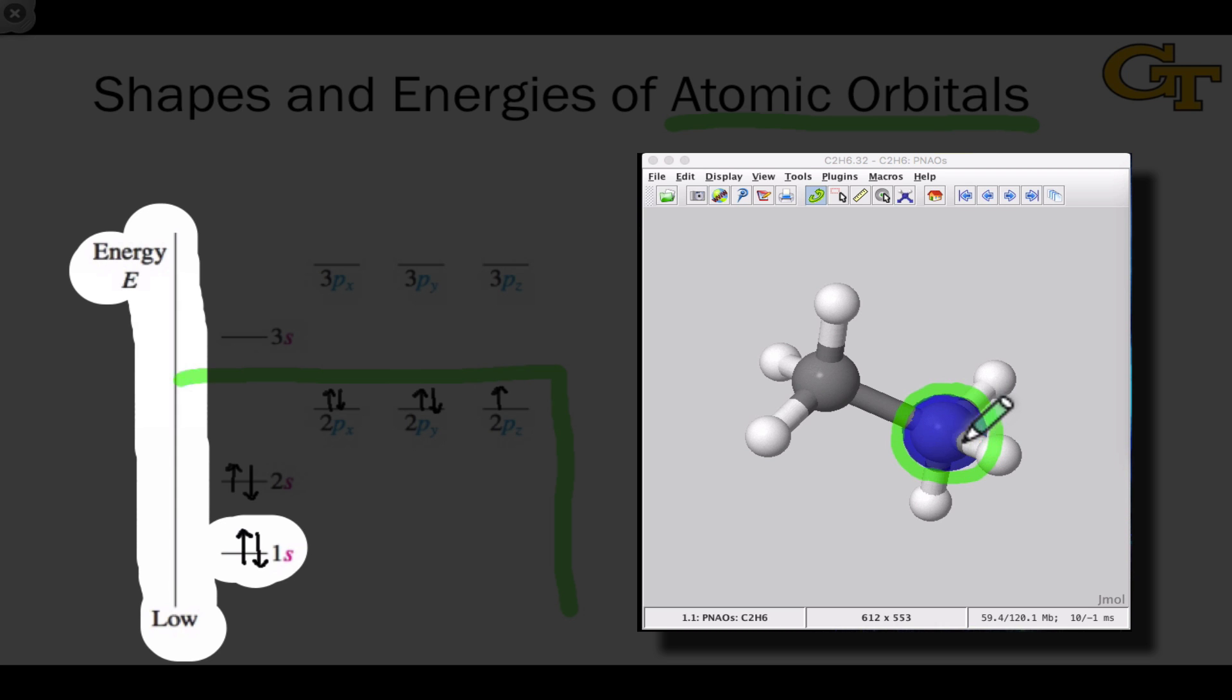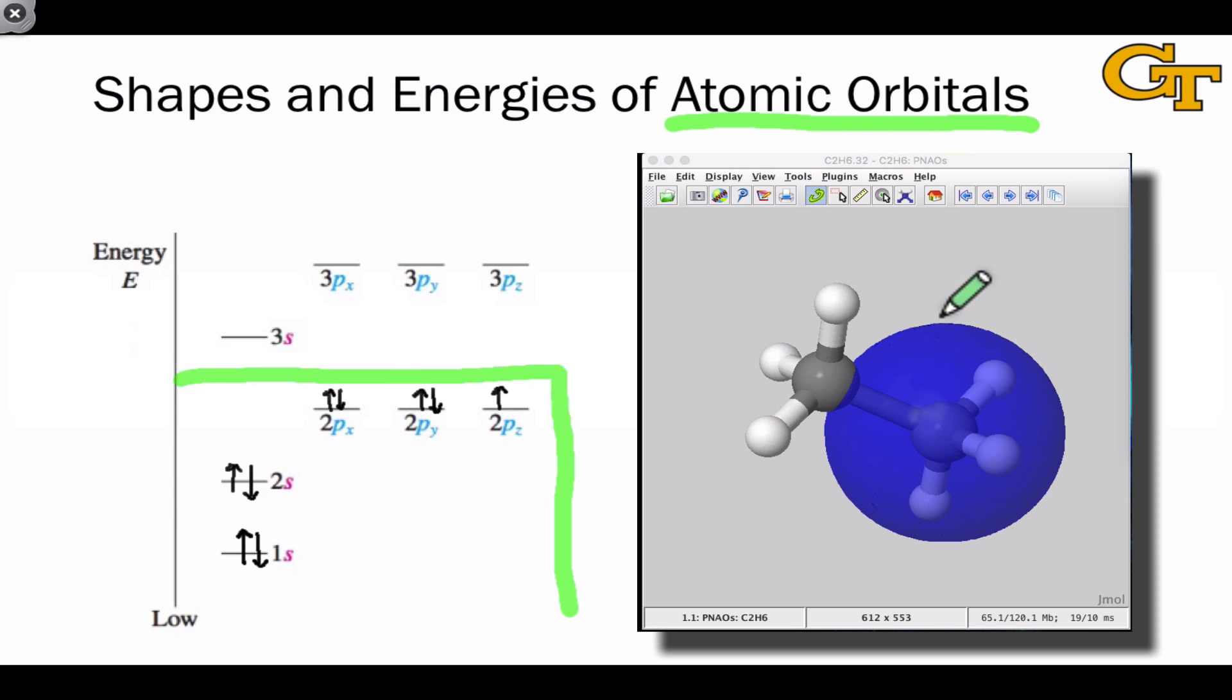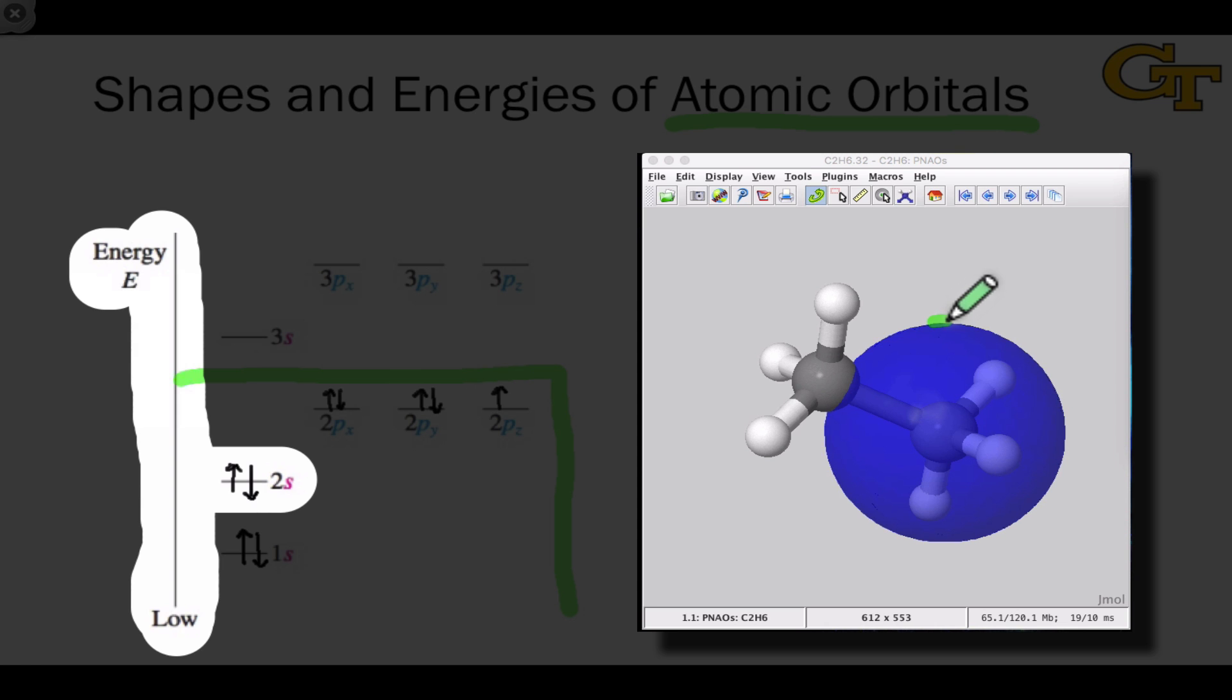The probability distribution of the electrons in this orbital is spherical in shape. If we now move to the 2s orbital, we see that there's a considerable increase in the size of the orbital, although it maintains its spherical shape.